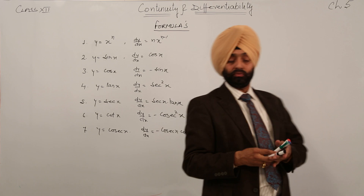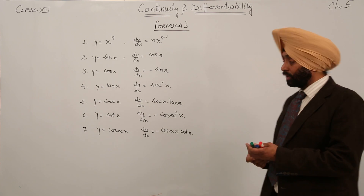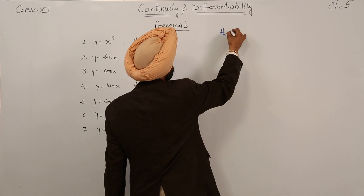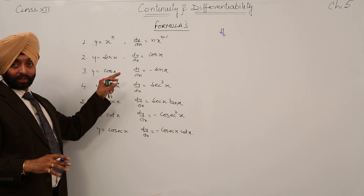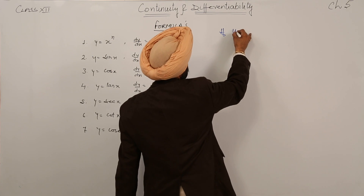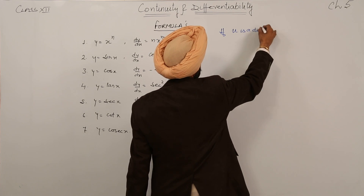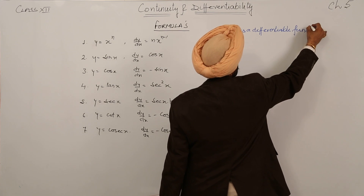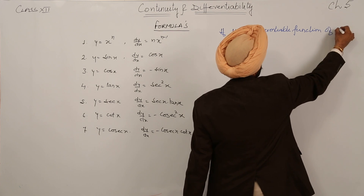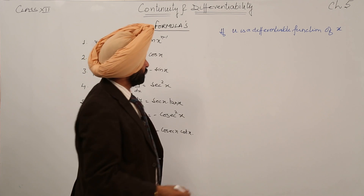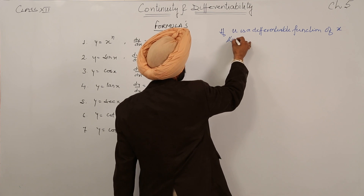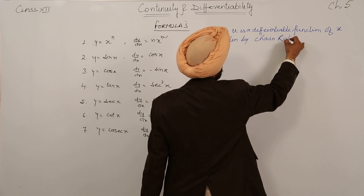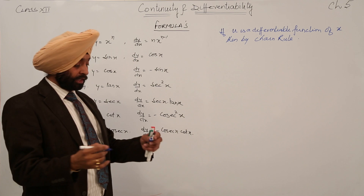Now these were some general formulas which we have done in Class 11th. Now just look at what I am doing. Here all arguments are x. Now I am writing: if u is a differentiable function of x, then by chain rule, what we are getting is the following.